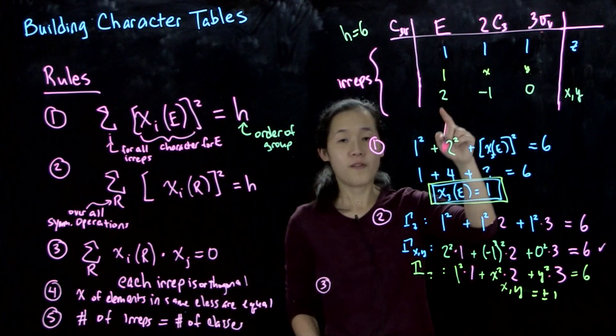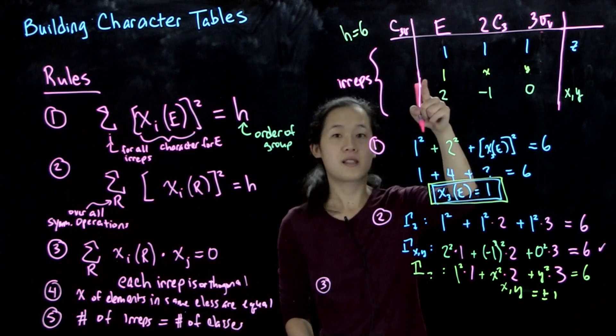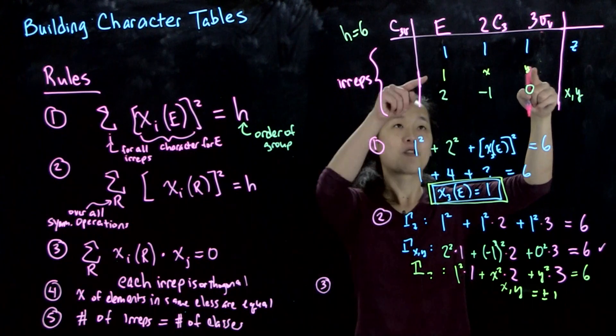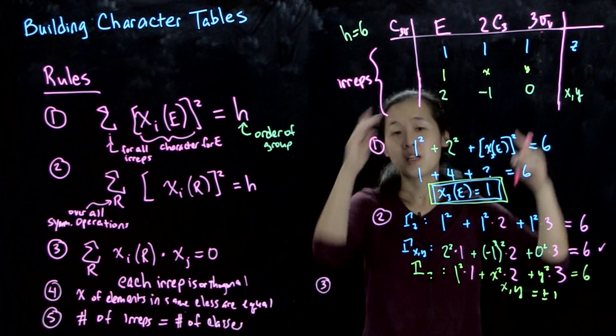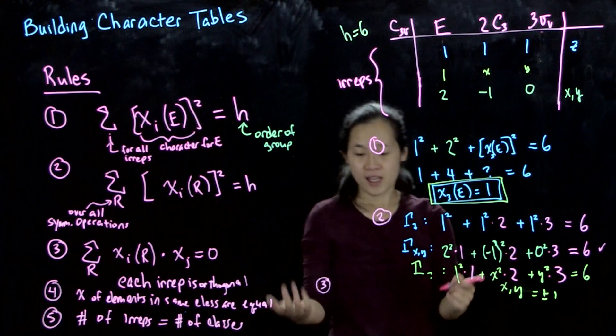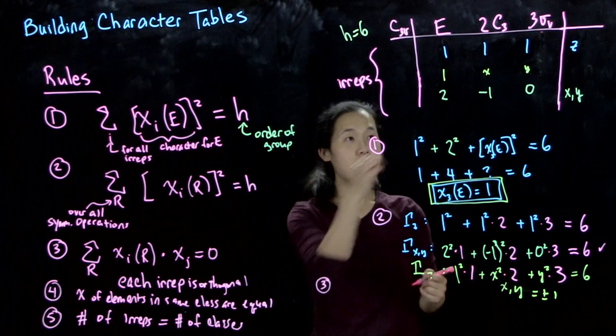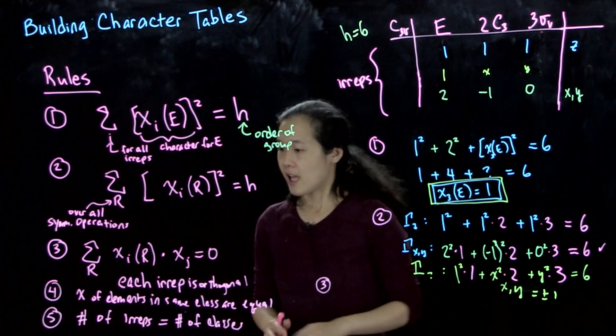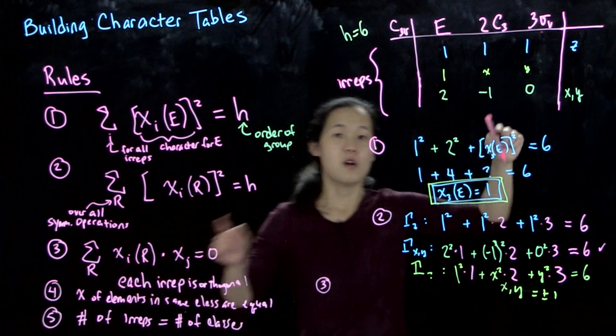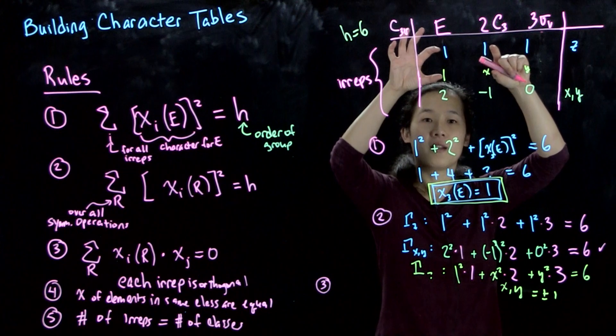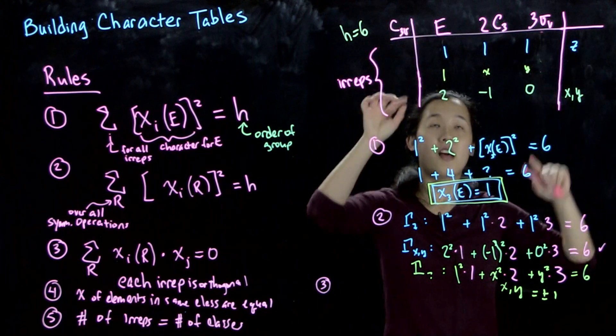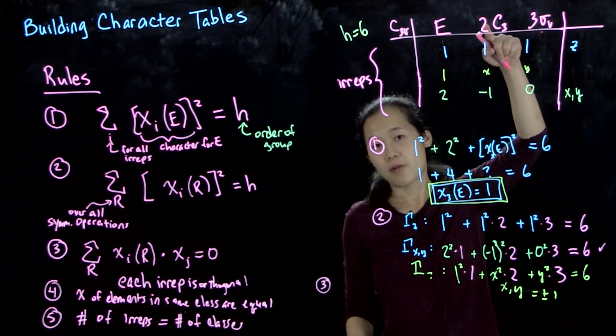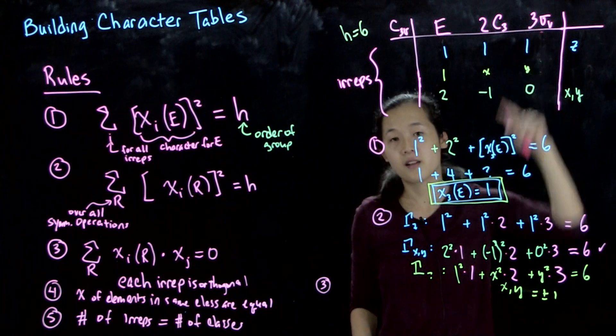So what we can do is we know that this missing EREP, gamma missing, has got to be orthogonal to either one of these. So we can take either one of these and then multiply it out to figure out what our missing variables are. So again, we're summing across the row, but multiplying each element together. And remember the coefficient is up here, because we're hiding two operations here, we're hiding three operations here.